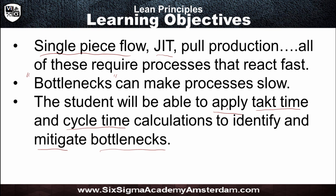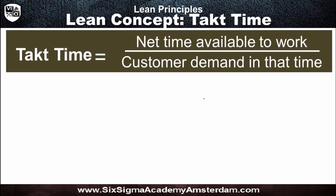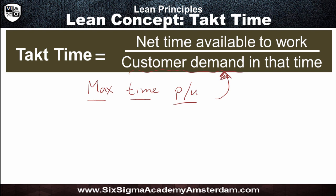First, I'm going to introduce you to takt time. What is takt time? If I were to express it in words, it's the maximum time available per unit if you want to satisfy the complete customer demand in that timeframe. The formula is very easy: net time available to work divided by the customer demand in that time.